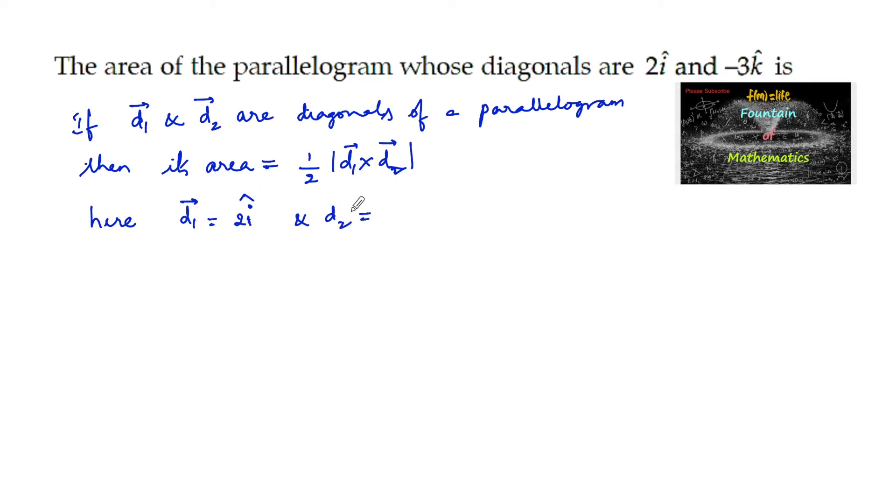d2 equals -3k cap. Let us find d1 cross d2. d1 cross d2 is i, j, k. For the first vector, it is 2, 0, and 0, since 2i cap plus 0j cap plus